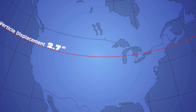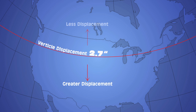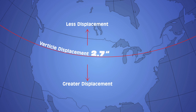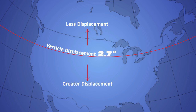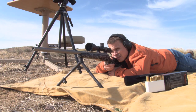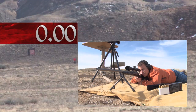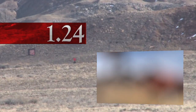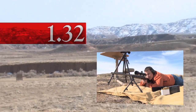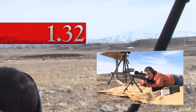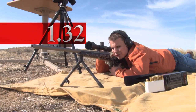In Wyoming, the vertical speed of the target is approximately 2.7 inches per second. This will vary with latitude, becoming greater at the equator. For a typical long-range cartridge, the bullet flight time to 1,000 yards is approximately 1.5 seconds.